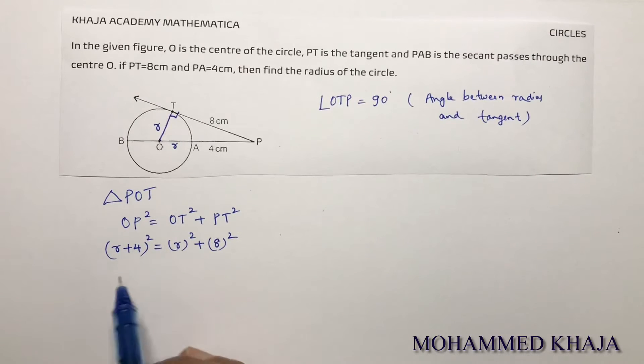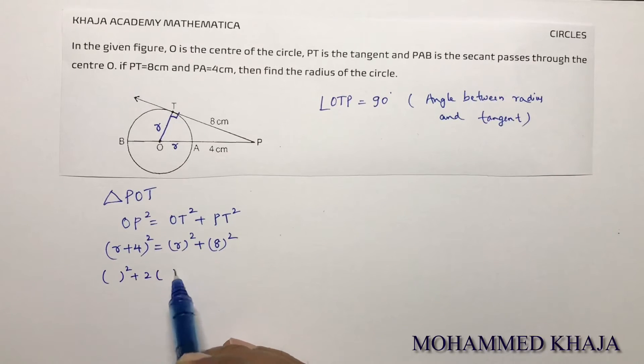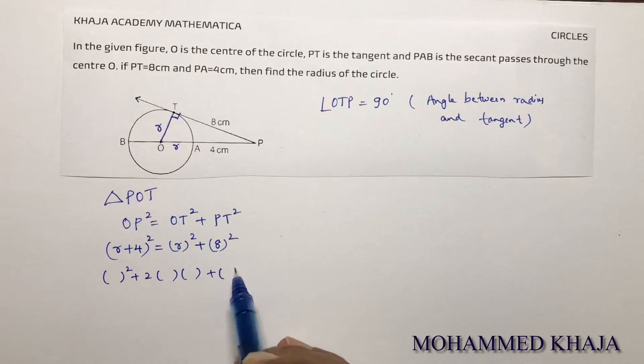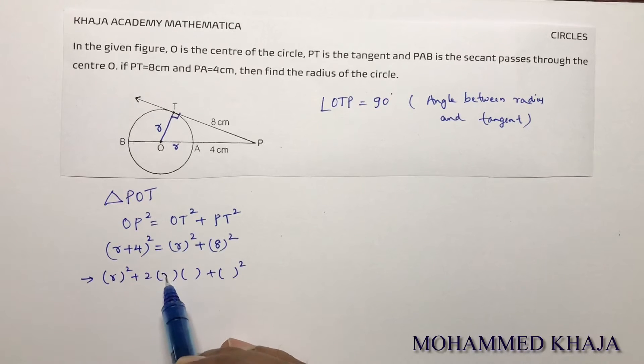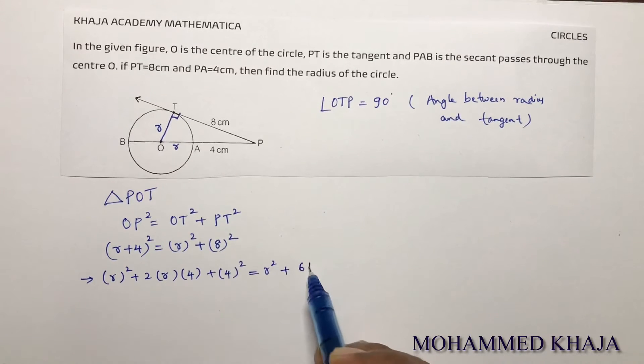Simplifying this, it is in the form of (A + B)². So A² + 2AB + B². Here R² + 2(R)(4) + 4² = R² + 64. R² and R² cancel out.